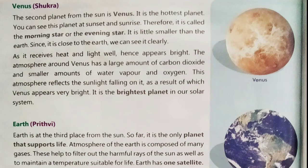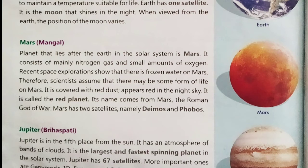Earth is at the third place from the sun. So far it is the only planet that supports life. The atmosphere of the Earth is composed of many gases. These help to filter out the harmful rays of the sun as well as maintain a temperature suitable for life. Earth has one satellite — the moon — that shines in the night. When viewed from the earth, the position of the moon varies.